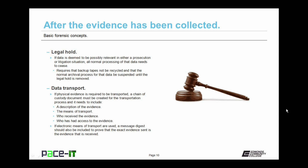There are some items to consider when electronic data needs to be transported and it's considered evidence. If it's physical evidence, as in a hard drive, a chain of custody document must be created for the transportation process. And it needs to include an exact description of the evidence, the means of transport, who received the evidence to transport it, and who had access to the evidence during the transport process. If you're using electronic means of transport, a message digest should also be included to prove that the exact evidence sent is the evidence that is received.